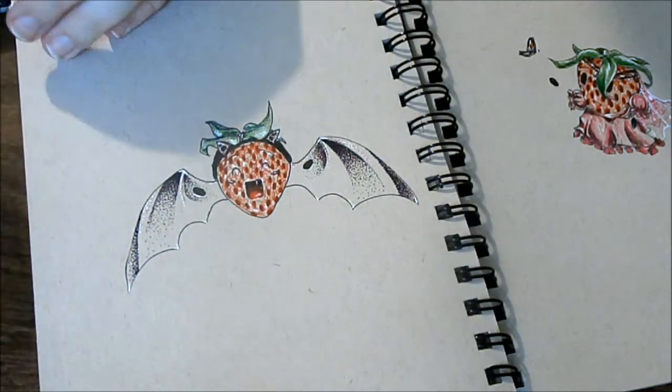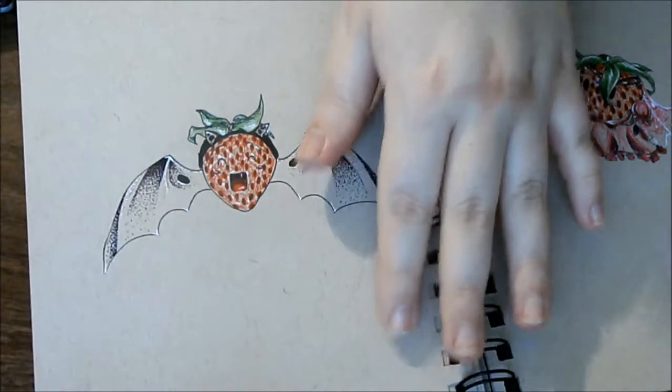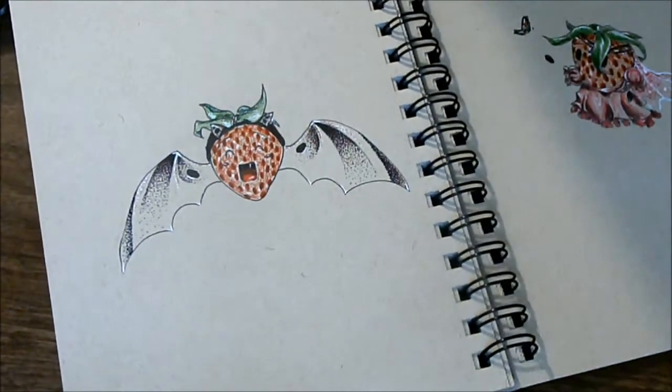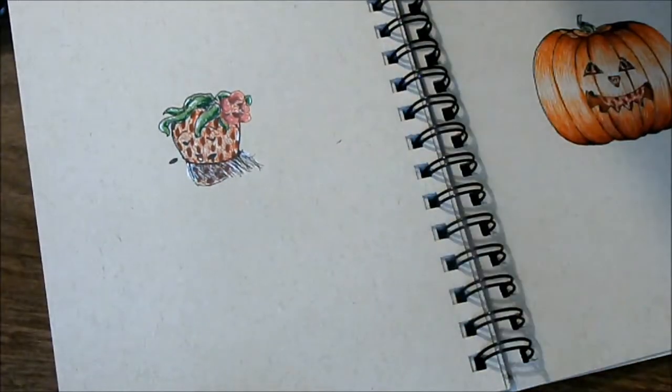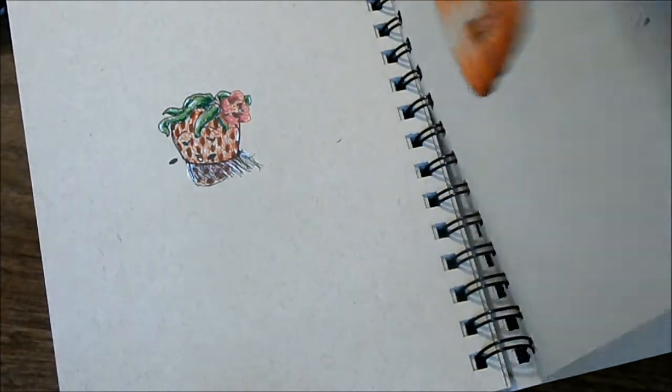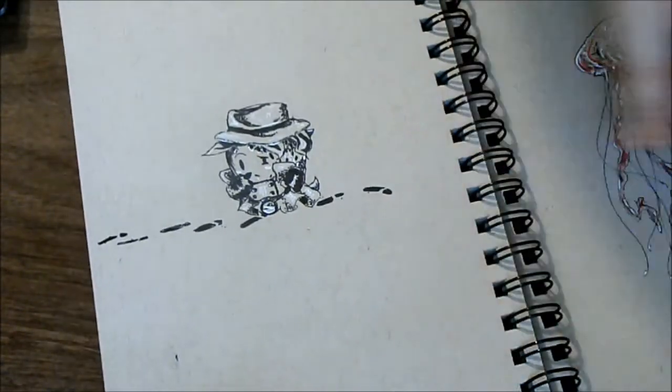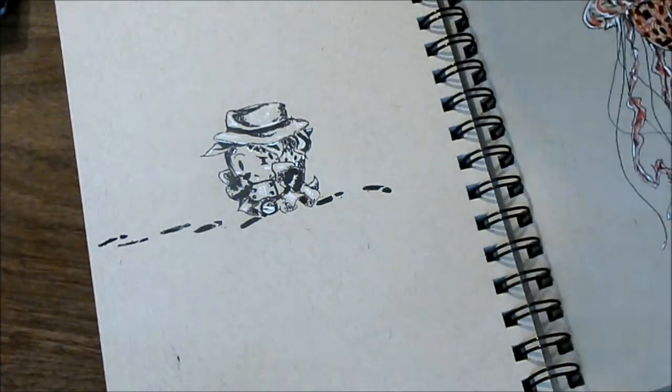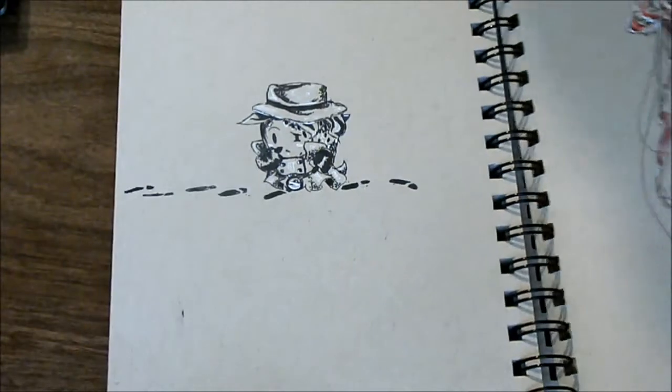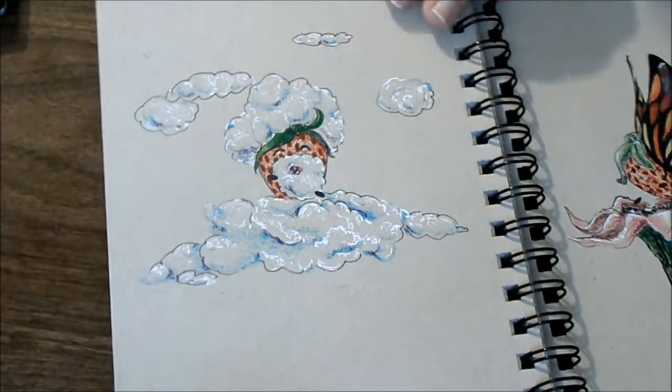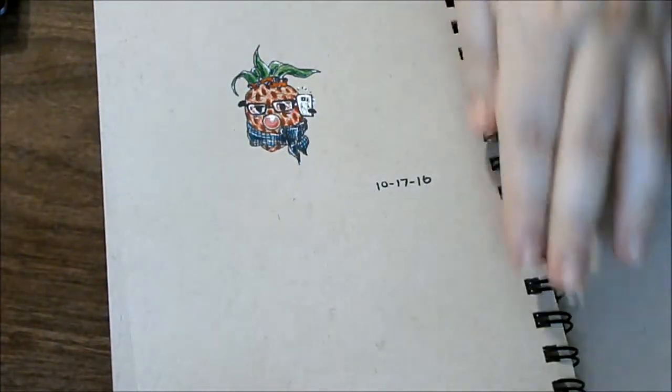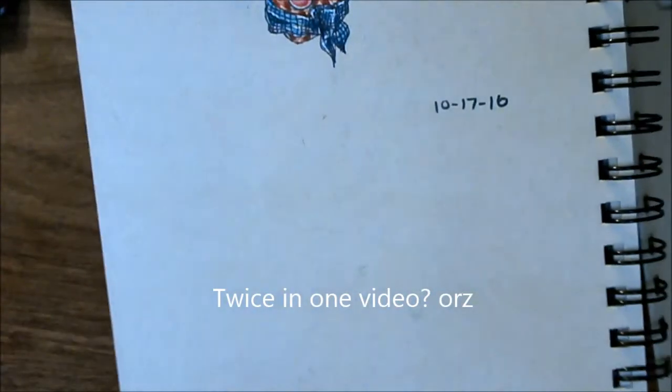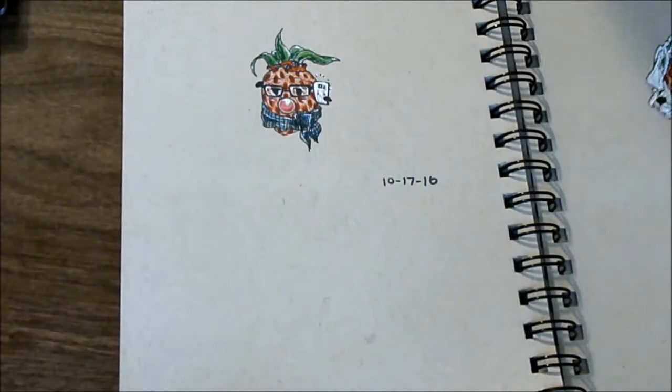So I decided to take it a bit easy this year with Inktober. Pretty much my only guidelines for this was one, no pencil sketch—just go straight in with the ink, and if there are mistakes, just go with it. And secondly, just to have fun and draw my character Zemi. There's actually one day where I did draw an original character that I just kind of made up on the fly, and that was kind of fun.